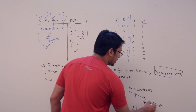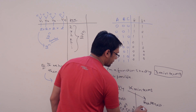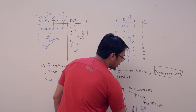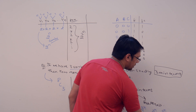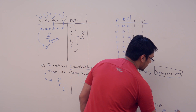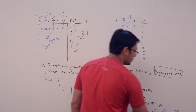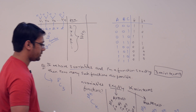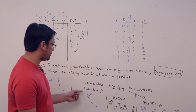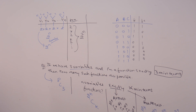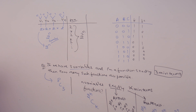And when the question is 'at least k minterms,' that means there are at least k minterms in the function. The formula for that case can be written accordingly. So you can answer questions about exactly, at most, or at least k minterms using these combinations formulas. I hope this is visible; if not, I can write it further up.